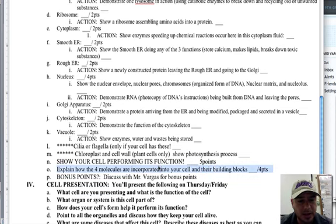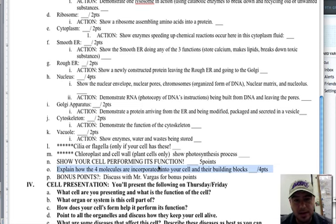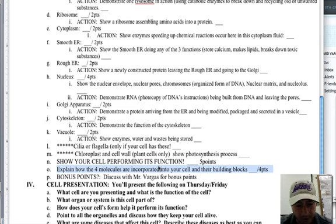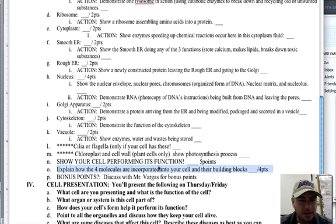Part O: explain how the four molecules are incorporated into your cell in their building blocks. Your cell is going to have nucleic acids — you'll be pointing to the DNA in your nucleus. It's going to have proteins made from your ribosomes. Lipids are in the cell membrane and all over the place — lipids are constantly in your cell, and you'll be breaking down fats for energy. And carbohydrates are everywhere — show carbohydrates getting into your cell for energy and carbohydrate receptors and things of that sort.